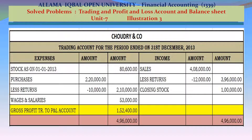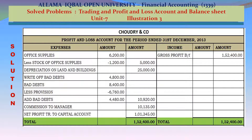On the debit side: Opening stock as on 1/1/2013 — 80,600; Purchases 220,000; less returns 10,000; net purchases 210,000; Wages and salaries 53,000. When we balance the trading account, there is a difference of 152,400. This is gross profit, transferred to the profit and loss account.